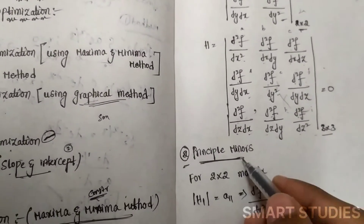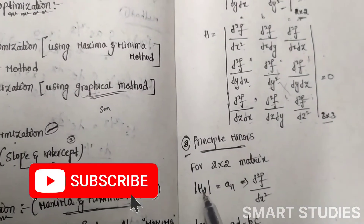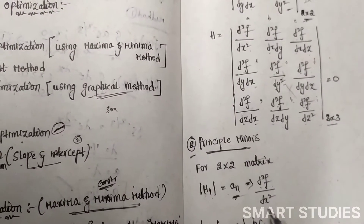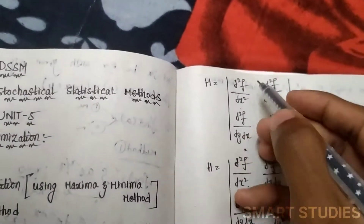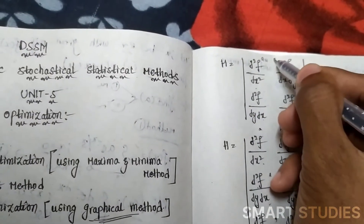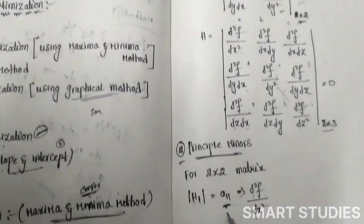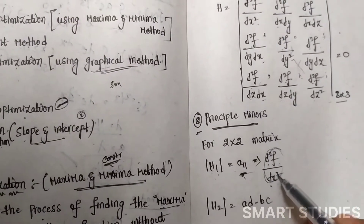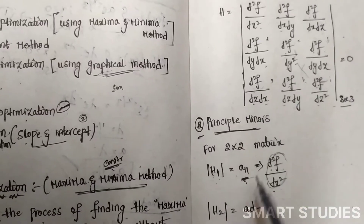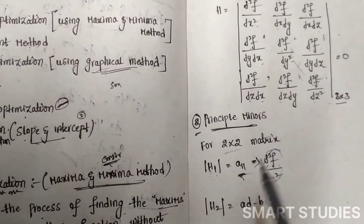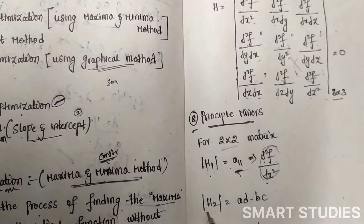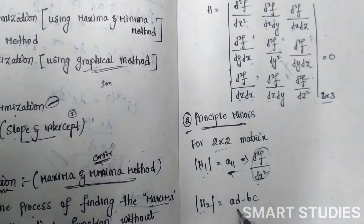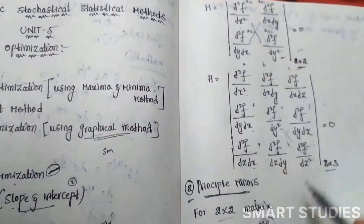After finding the Hessian matrix, the second step is to find the principal minors. For a 2×2 matrix, we have principal minors |H1| and |H2|. |H1| equals ∂²f/∂x², which is the a11 element. |H2| is found by the determinant formula: ad minus bc, giving us the second principal minor.